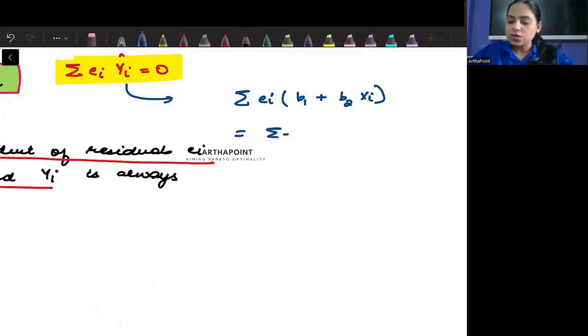This will be summation ei into B1 plus summation ei B2 Xi. So B1 is a constant, it will come out: summation ei plus B2 summation ei Xi.